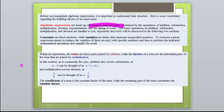Constants are fixed numbers while variables are letters that represent unspecified numbers. To evaluate a given expression means to replace the variables, if there are any, with specific numbers, and then to perform the indicated mathematical operations and simplify the result.